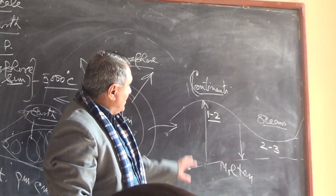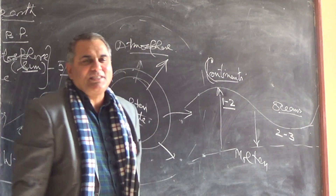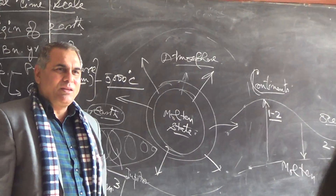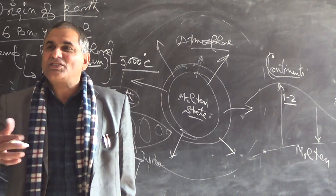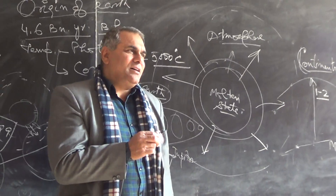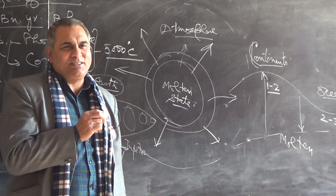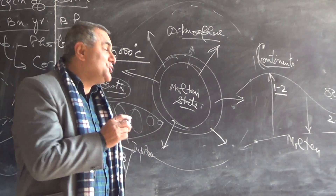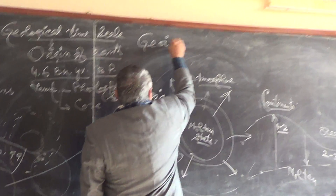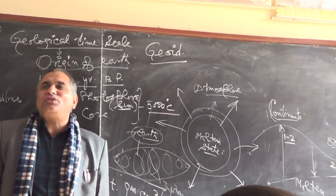Then the Earth's formation took place. The shape of the Earth is generally spherical, or we can say spheroid. But geographically, the shape of the Earth is called the geoid shape.